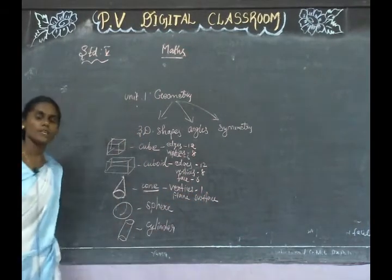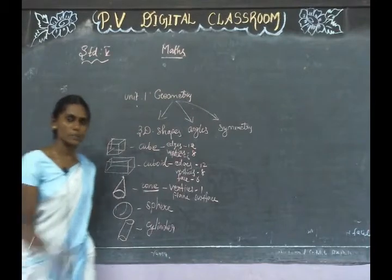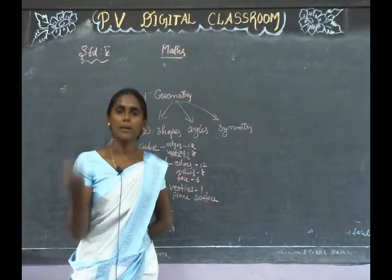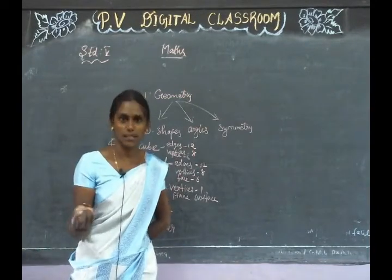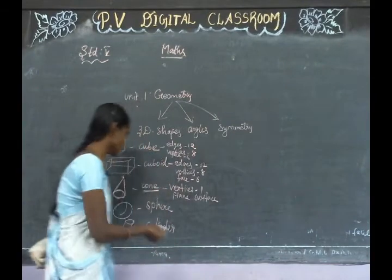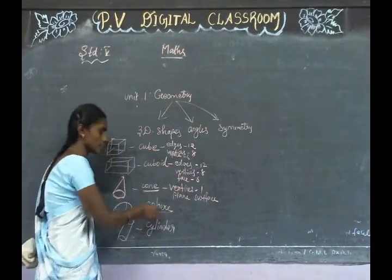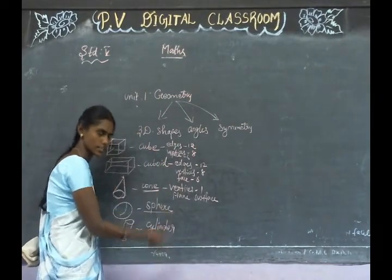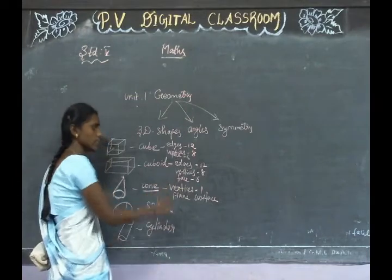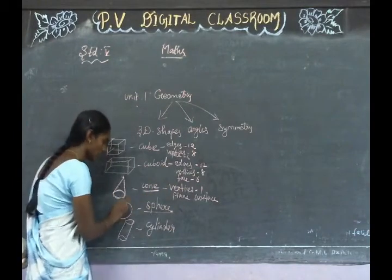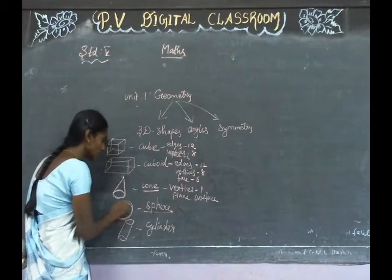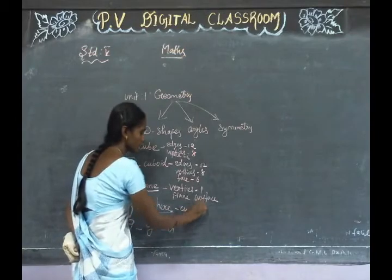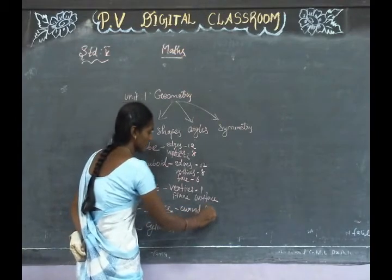Next is sphere. In the sphere, what we can say is it's like a circle. There are no edges. Sphere has no sides, no edges, no vertices, no corners. It is a curved surface.